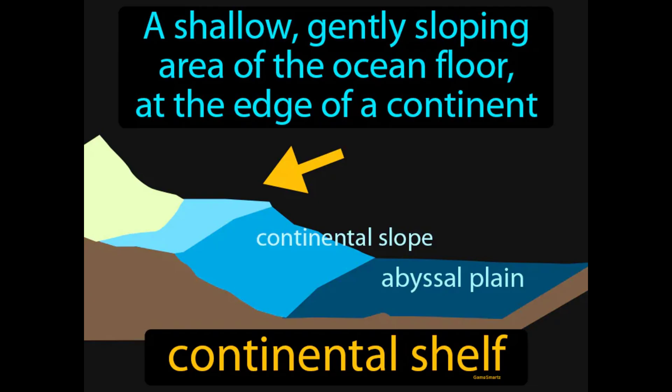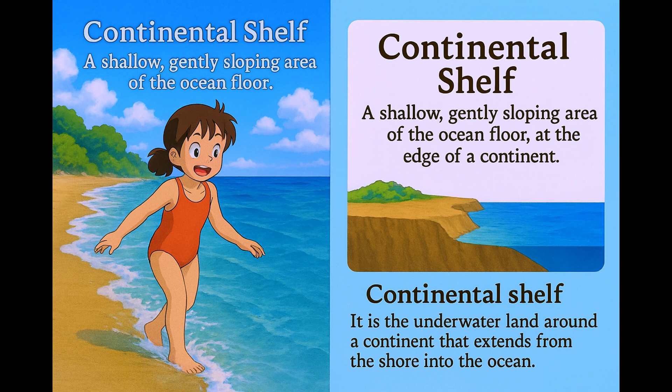A shallow, gently sloping area of the ocean floor at the edge of a continent — the continental shelf. It is the underwater land around a continent that extends from the shore into the ocean. Imagine you're at the beach and you slowly wade into the water; it starts off shallow and gradually becomes deeper as you move further away from the shore.